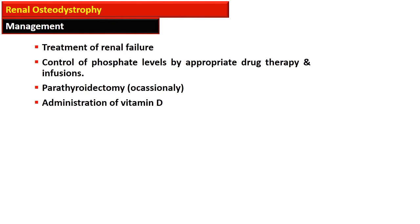Keeping in mind the pathogenetic events, management of renal osteodystrophy revolves around treatment of renal failure, control of phosphate levels by appropriate drug therapy and infusions. Occasionally, parathyroidectomy is also performed, and vitamin D is administered.